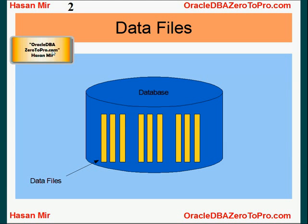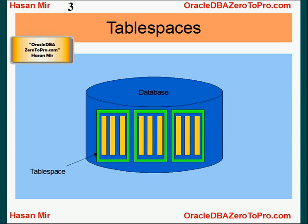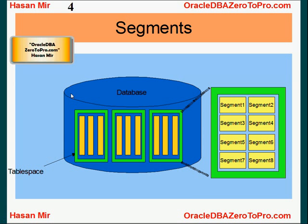You can group data files into tablespaces — that's the logical grouping. A tablespace would consist of one or more data files; however, one data file can only go into one tablespace. It's like a one-to-many relationship. You can further break down a tablespace into segments, which is a logical subdivision.